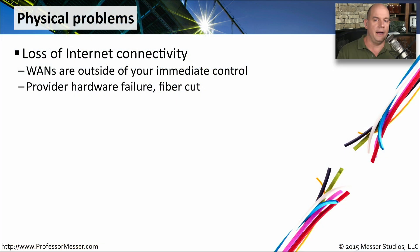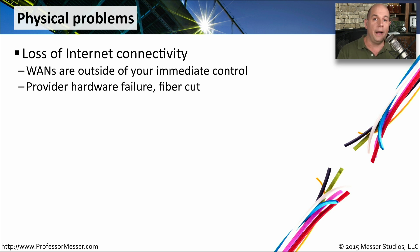On your local area network, you have complete control over the physical plant. If someone is having a problem with a bad cable, you simply swap the cable out, or you re-crimp the ends and you're up and running again. But the wide area network cables are completely outside of your control.